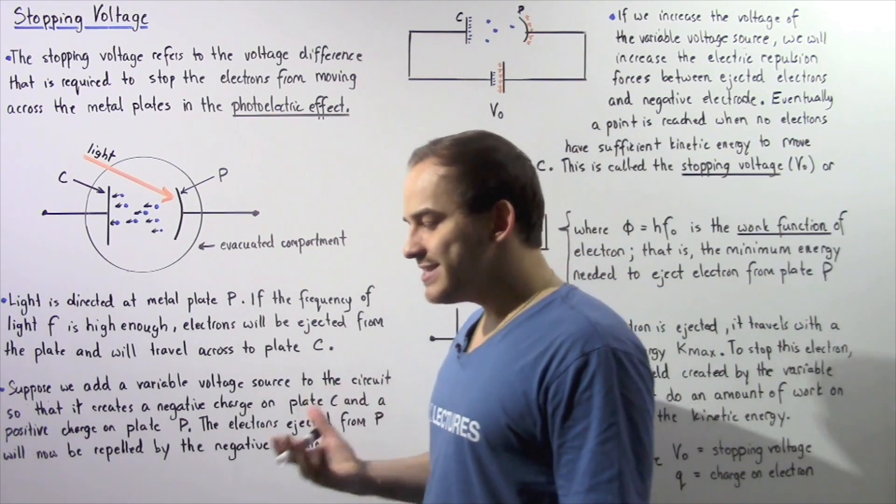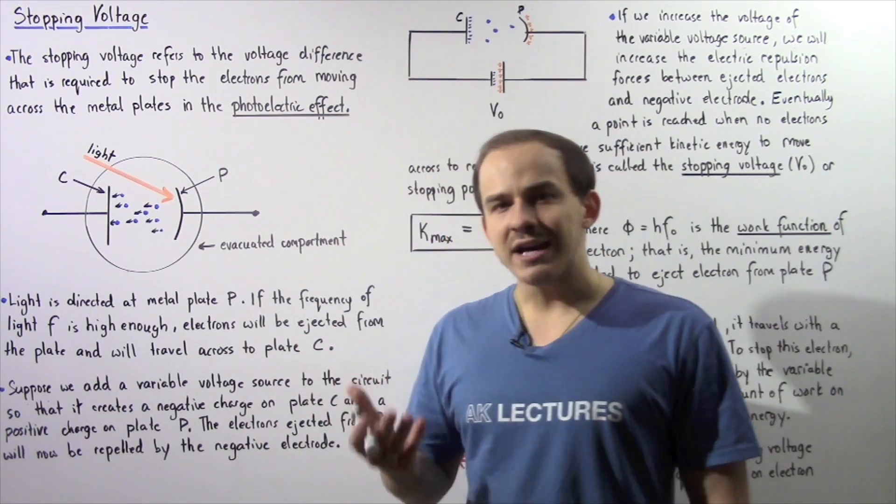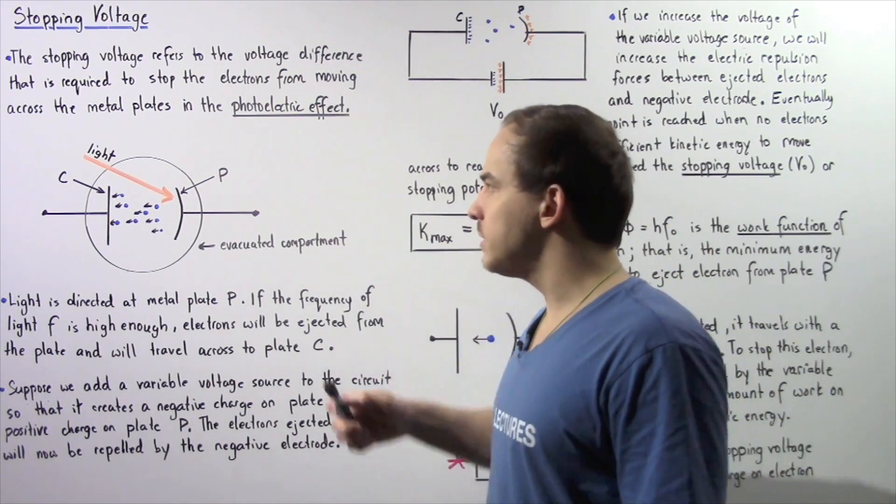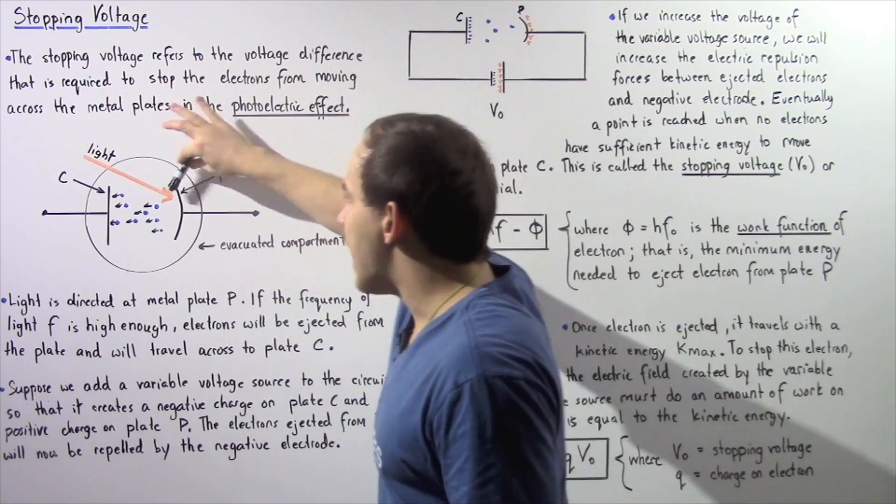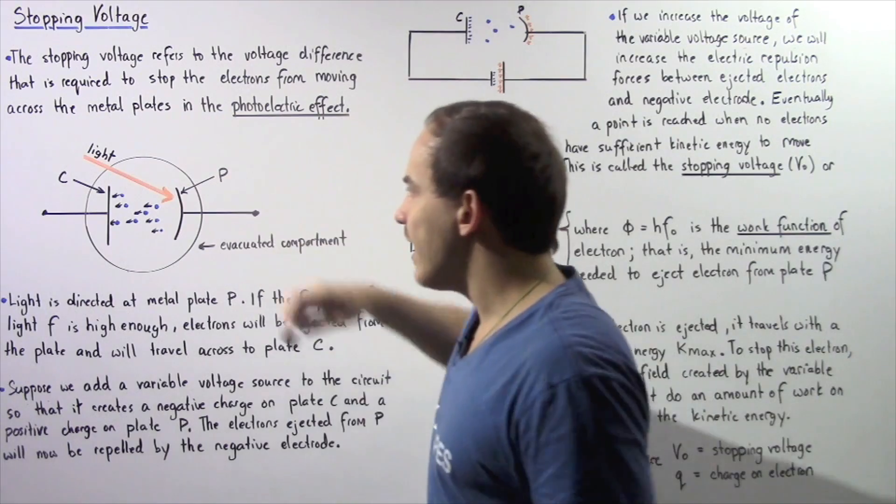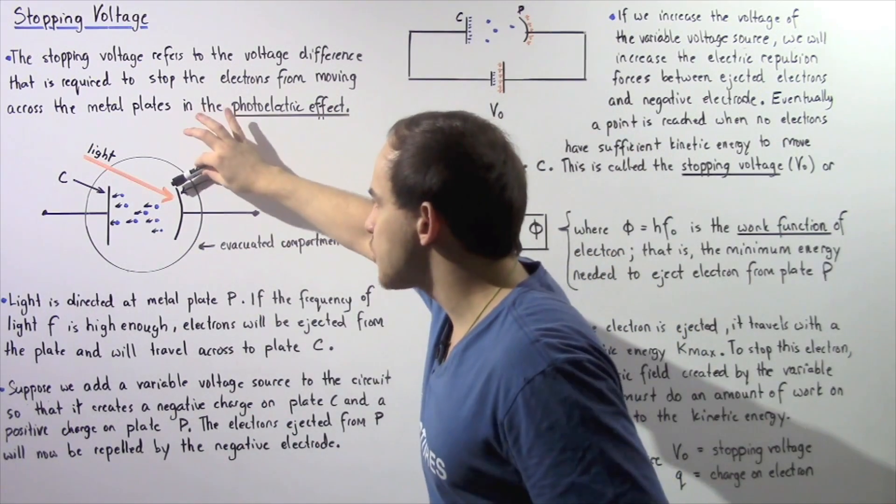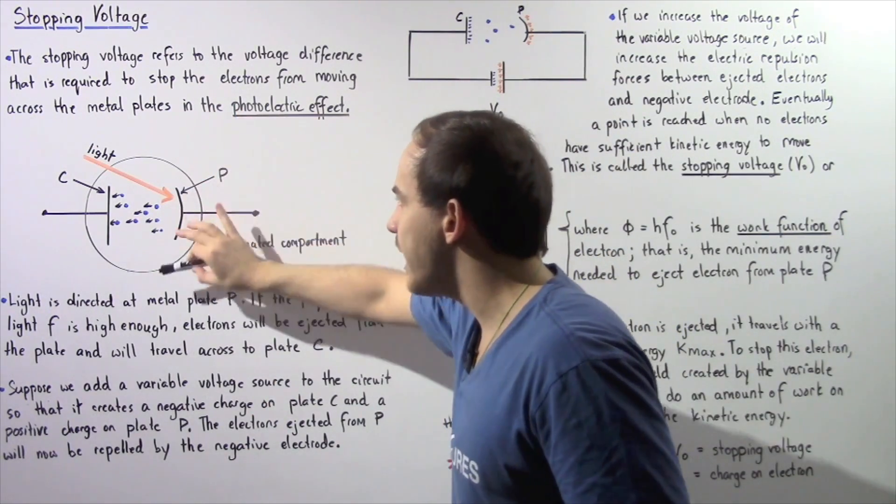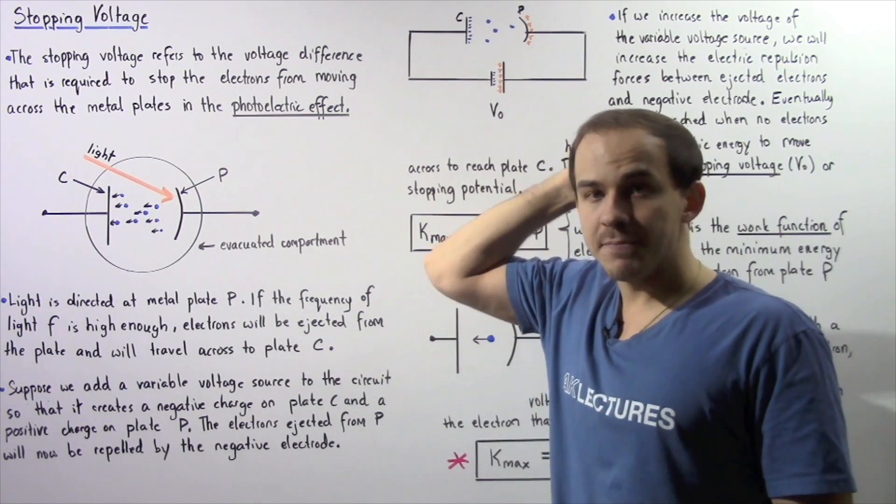Basically, we take light and direct that light onto the surface of a metal plate. So the following light, as shown by the following arrow, is directed onto the surface of the following metal plate. Let's call it metal plate P.